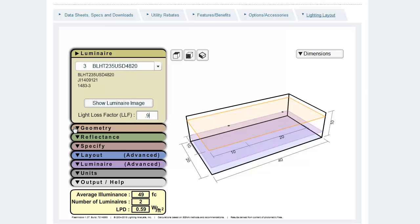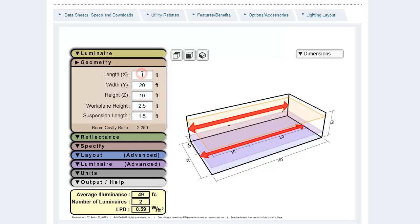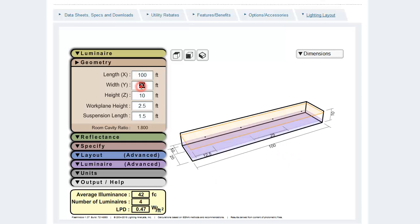Select your room dimensions. The diagram on the right will highlight the appropriate value and adjust in real-time as you enter each value.